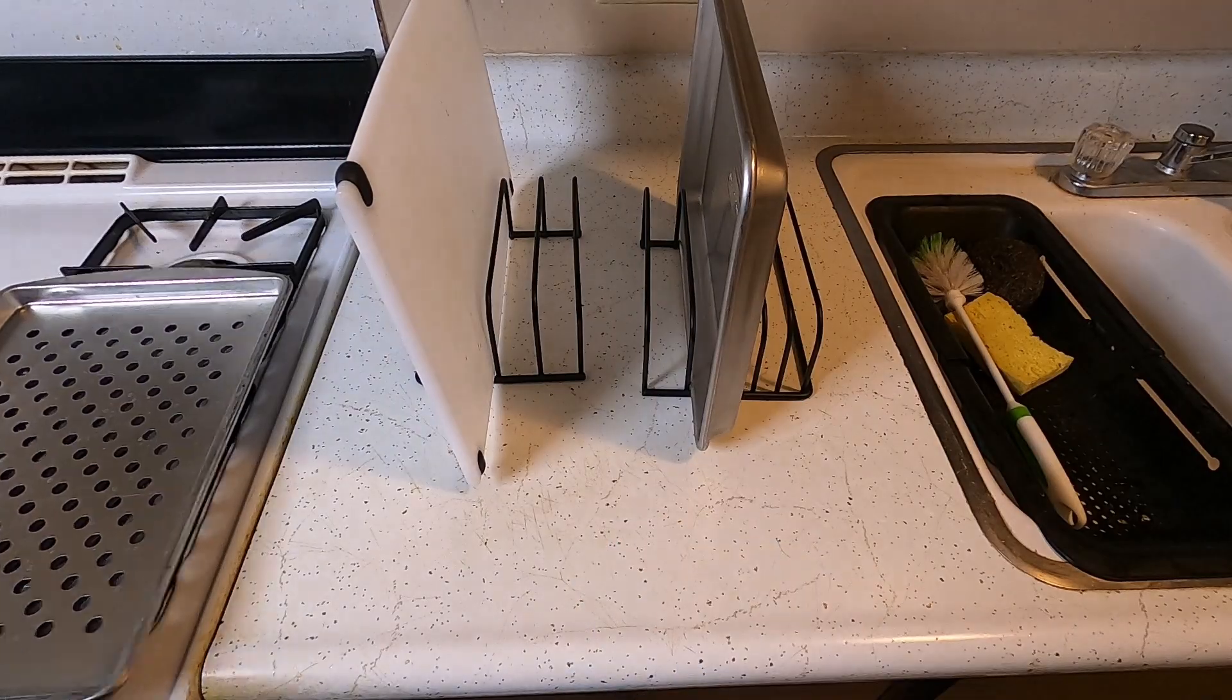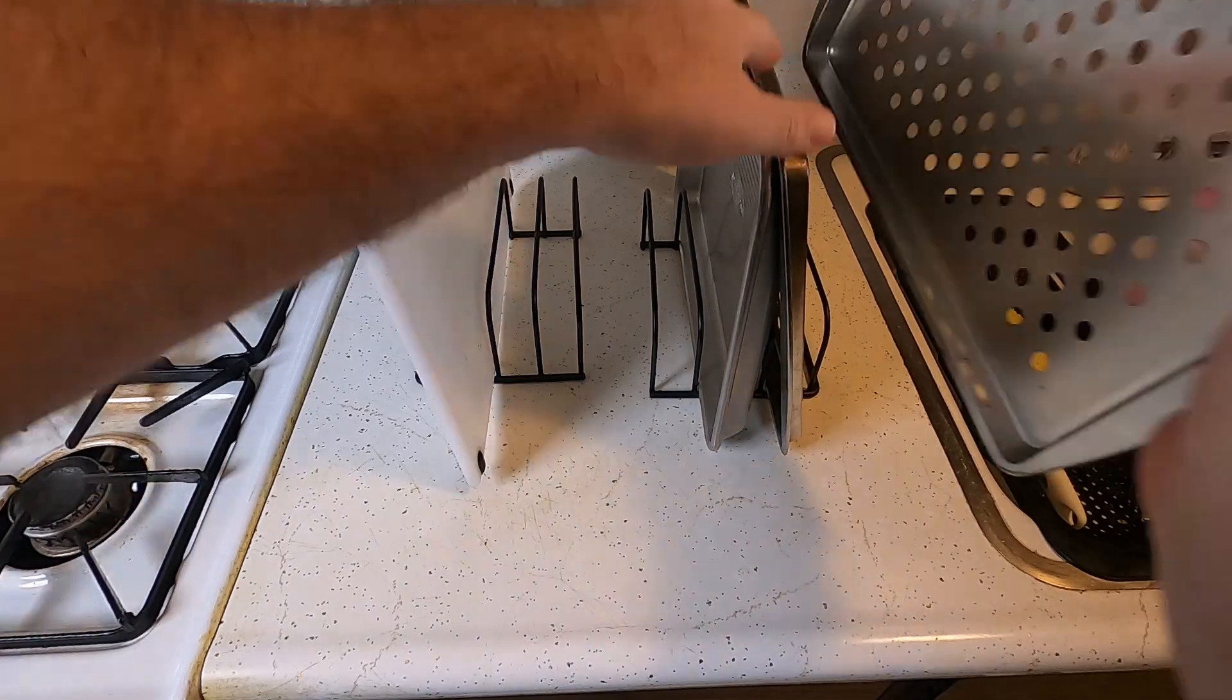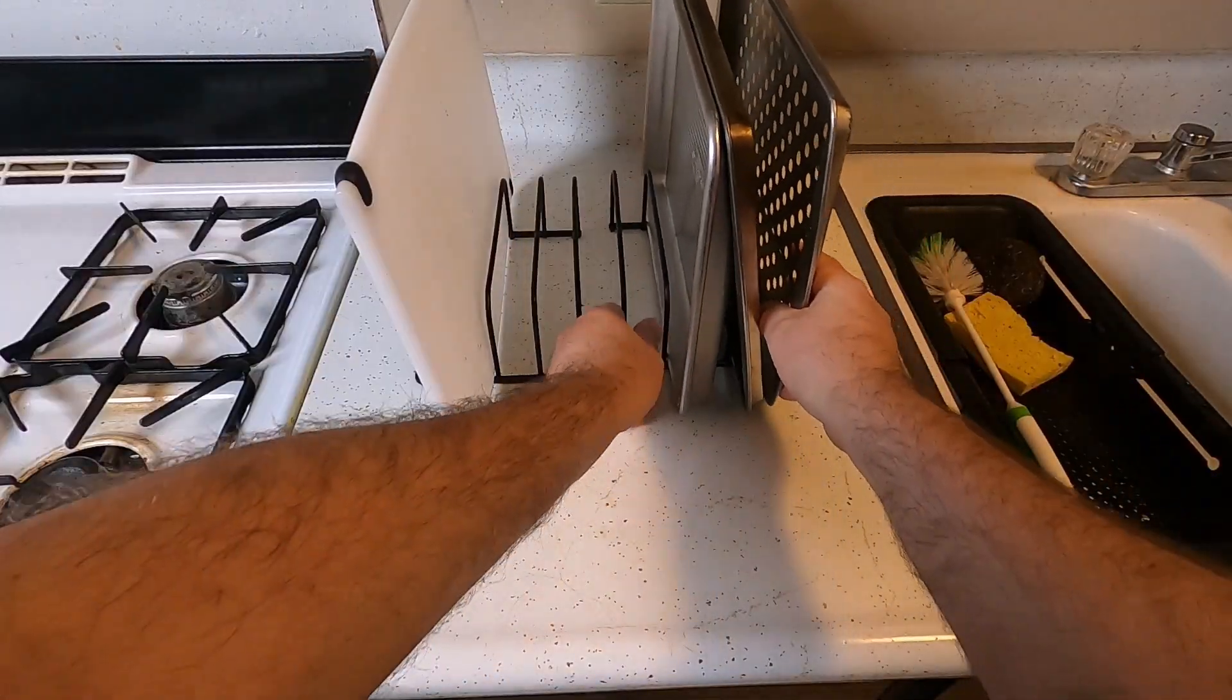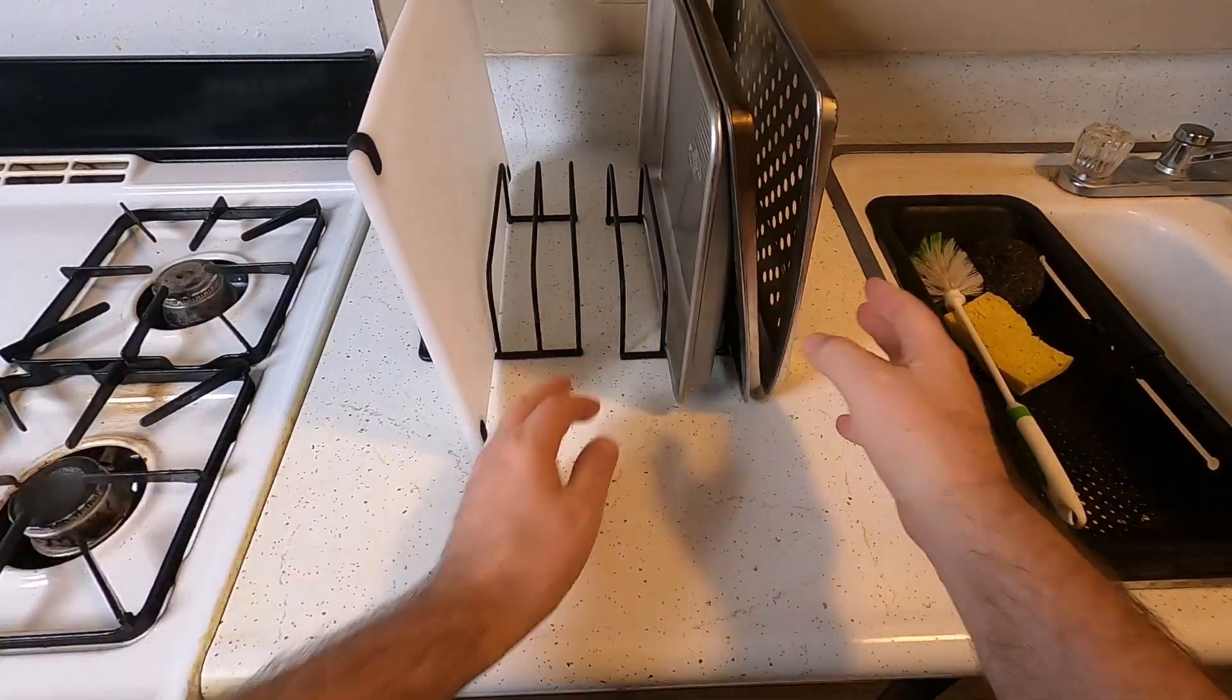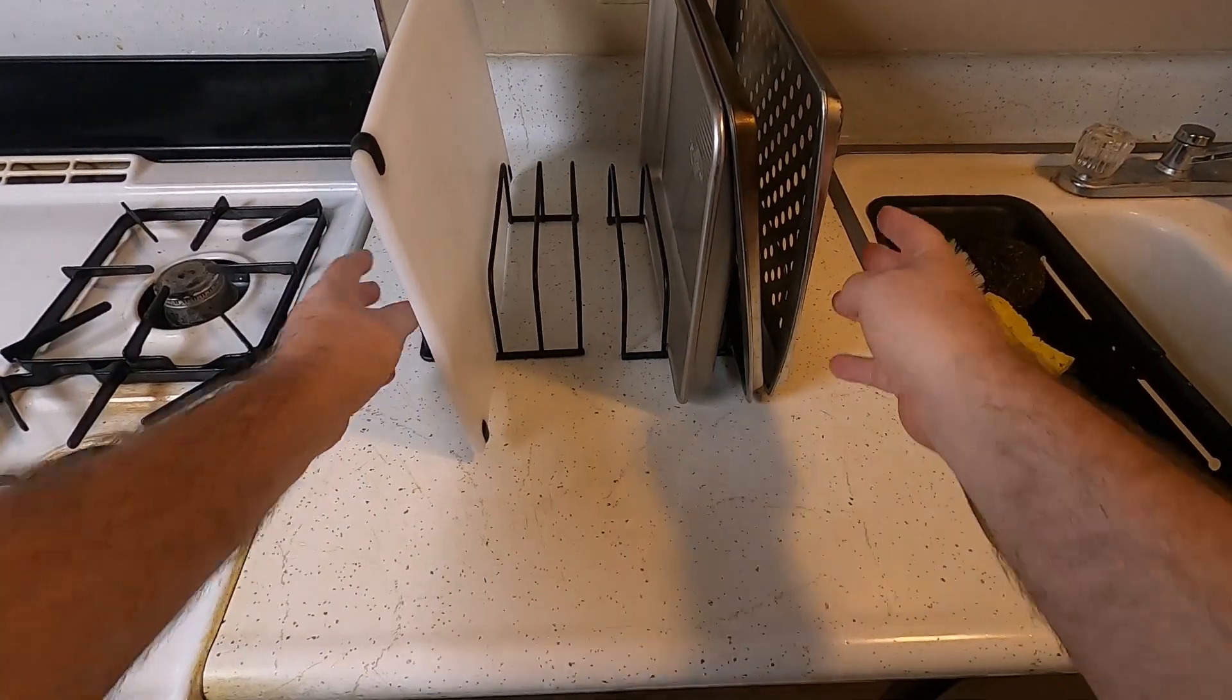And then I have some more sheets right here, so those will just sit in the organizer just like this. So this is a great way to organize your pans and your sheets and your cutting boards vertically so you don't have to stack them.